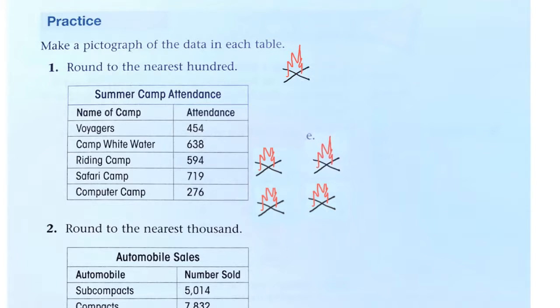Then we've got an E. All right, so let's make our key. So each campfire equals one hundred campers.